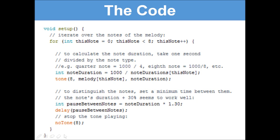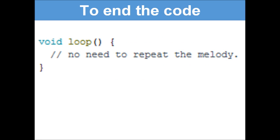And then finally we need to stop the tone playing: noTone(8). And then to end the code we just do a void loop. You might be wondering why we're doing it when there's nothing in it. You always need to have a void setup and a void loop in every single Arduino program.